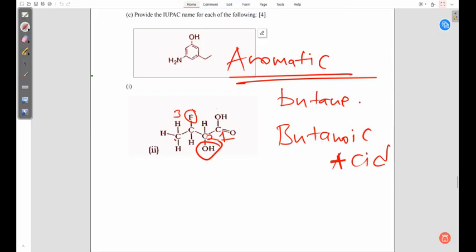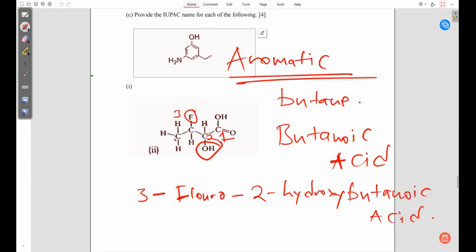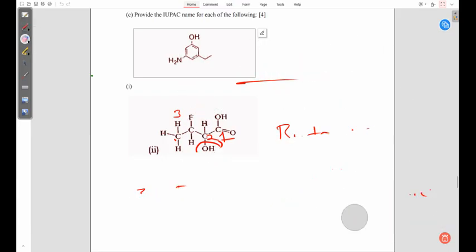Between hydroxyl and fluorine, which comes first? Between F and H, F comes first alphabetically. So we have 3-fluoro and then 2-hydroxyl, and then the parent name comes at the end: butanoic acid. That's how you can name these two structures.